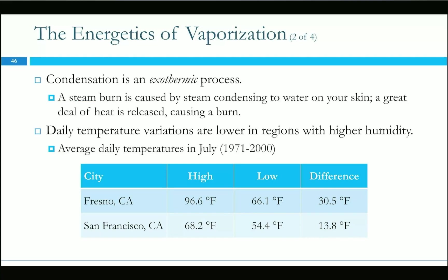Condensation releases heat, causing temperatures to not fluctuate as much in humid places. In deserts, it can be 105°F during the day and drop to 70°F at night because there's little humidity. Whereas in San Francisco, there's a much smaller difference in temperature day to night.